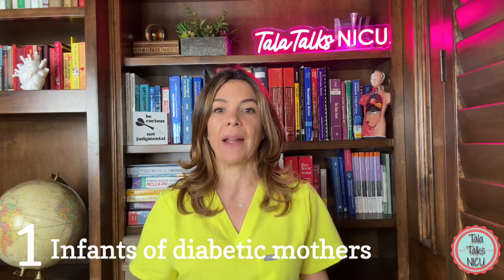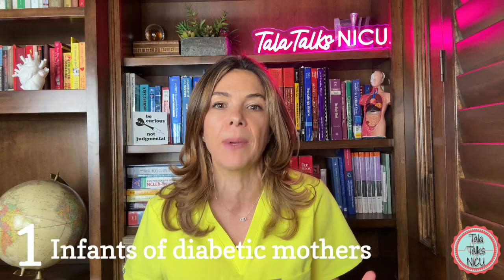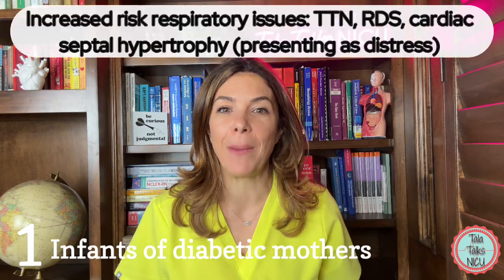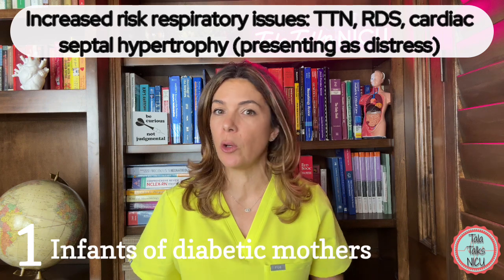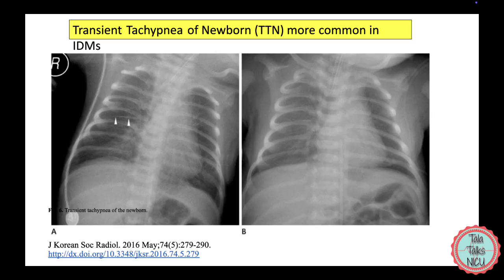Birth trauma could be things like a clavicular fracture, or shoulder dystocia with an Erb's palsy or a Klumpke's paralysis. These babies are also at higher risk of respiratory issues — increased risk of TTN (transient tachypnea of the newborn) and increased risk of respiratory distress syndrome. Those are like the huge 37-weekers that somehow still need surfactant.